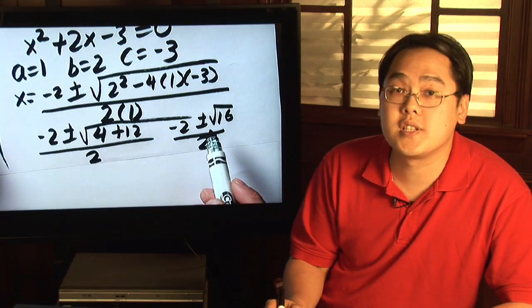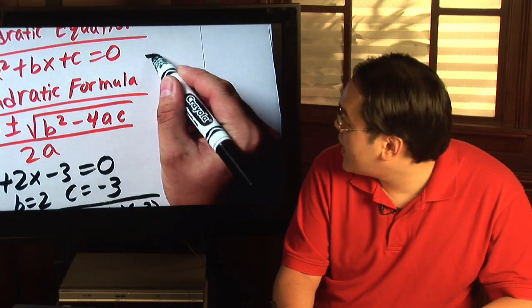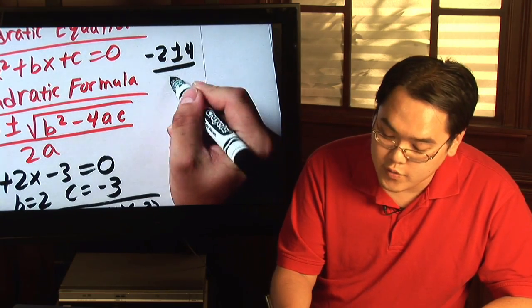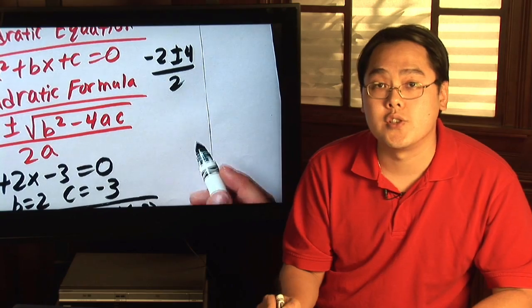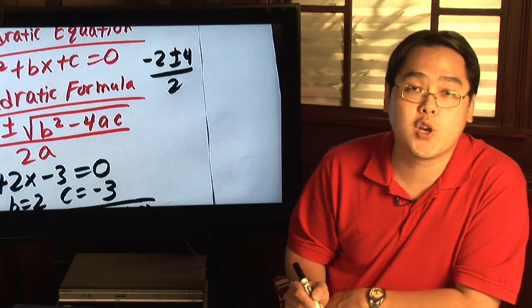Square root of 16 is indeed 4, so up here, you now have negative 2 plus or minus 4, over 2. Now, this has two answers. You need to break them up as two separate solutions, but once you have them, you've solved the equation.